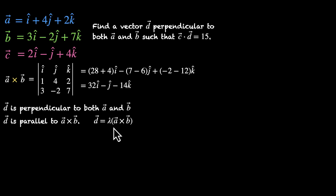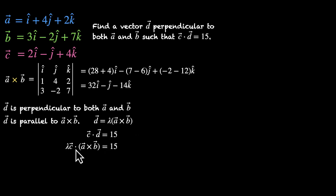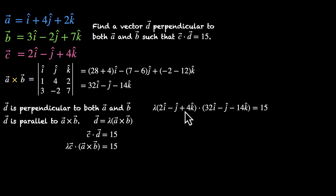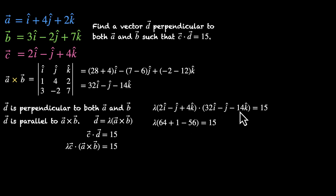We also know that c dot d equals 15. Substituting d as lambda times (a cross b), we get: lambda times c dot (a cross b) equals 15. So lambda times (2i minus j plus 4k) dot (32i minus j minus 14k) equals 15. Taking the dot product: lambda times (64 plus 1 minus 56) equals 15, so 9 lambda equals 15, giving lambda equals 5 over 3.